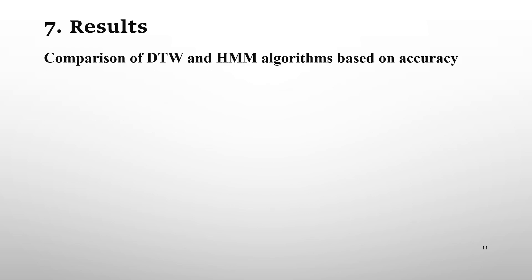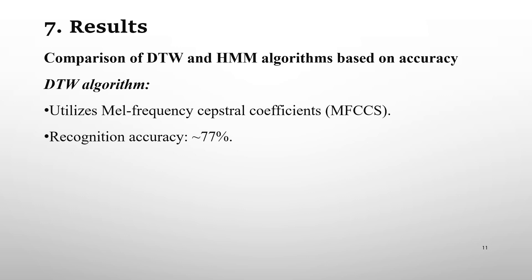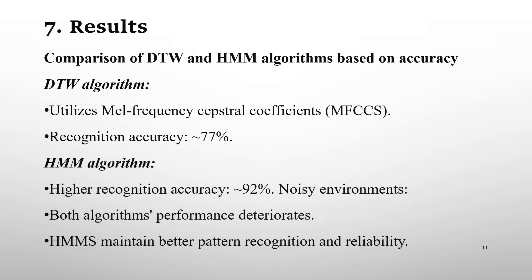Now the results. Comparison of DTW and HMM algorithms based on accuracy. The DTW algorithm utilizes Mel-frequency cepstral coefficients, MFCCs, which compare time series data capturing speech phonetic properties. In terms of accuracy, it achieves around 77% recognition accuracy by aligning sequences with minimum distance. The HMM algorithm has higher recognition accuracy, up to 92%.